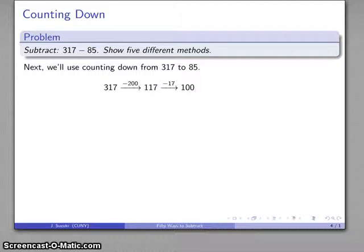Maybe I'll go back 17 to 100, back 10 to 95, back 5 to 85. And again, how far have I gone back? That's 200, 217, 227, 232. And so my difference is going to be, again, 232.